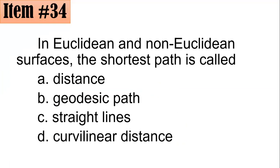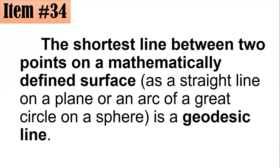Okay, 34. In Euclidean and non-Euclidean surfaces, the shortest path is called A, distance, geodesic path, straight lines, or curvilinear distance. The correct answer here is, it's not distance, but we call it a geodesic line or a geodesic path. The shortest line between two points on a mathematically defined surface, as a straight line on a plane, or an arc of a great circle on a sphere, for example, is in fact a geodesic line or a geodesic path. Letter B. I hope you got it.